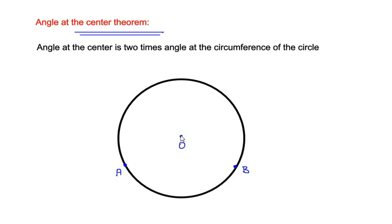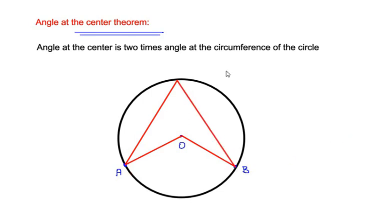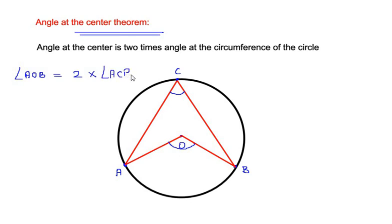We have a circle with two points A and B on it, and the center at O. The angle AOB is drawn from the center, and the same two points make an angle at the circumference at point C. According to the theorem, angle at the center, which is angle AOB, is always two times the angle at the circumference, which is angle ACB. For example, if the angle at the circumference is 40 degrees, the angle at the center is two times 40, which is 80 degrees.